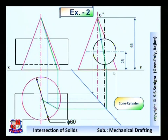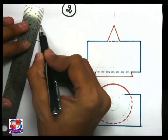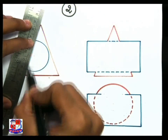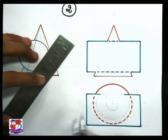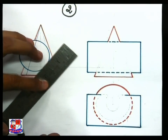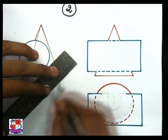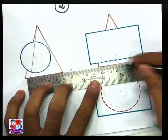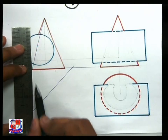With similar analogy we can find out all remaining points by drawing imaginary generators and picking up the points respectively. Now draw this problem on the drawing sheet. To find out other points of intersection, draw imaginary generators over here. This generator will cut this circle at two points - one here, another here. Draw the meter line. From this point draw a straight vertical line, transfer to the meter line, and from that transfer the point to the top view.